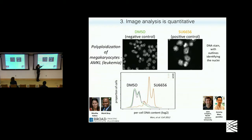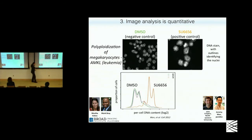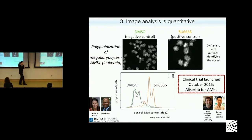The negative controls have two peaks at 2n and 4n DNA content — before and after replication. In the positive control, if we quantify the DNA intensity within each nucleus, we get very nice 8n, 16n, and 32n peaks on a log scale. In this case it allowed them to identify compounds, and a clinical trial was launched in October 2015 for a drug they hypothesized will be helpful against this particular type of leukemia.